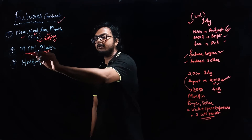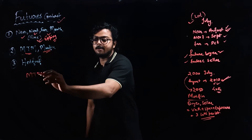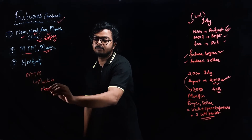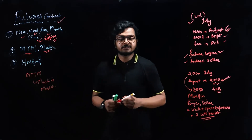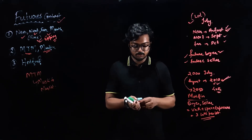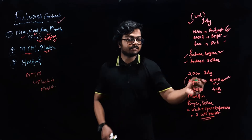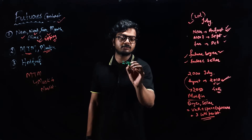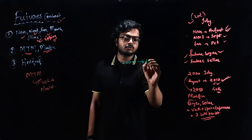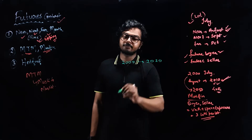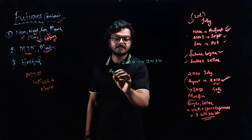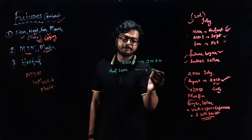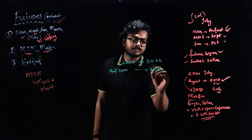Now let's see what M to M is. M to M is mark to market. Say for example, today you bought Reliance futures at 2010. Now say today the price moved from 2000 to 2020. So your August futures price was 2010, and it would also move by around 20 points, so it would be around 2030.